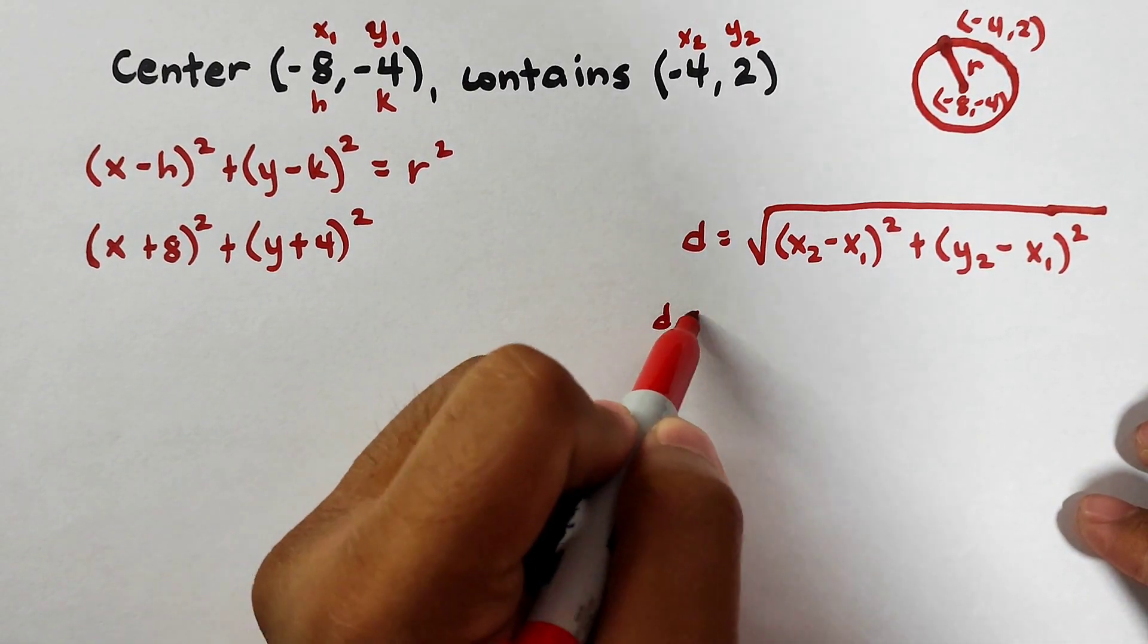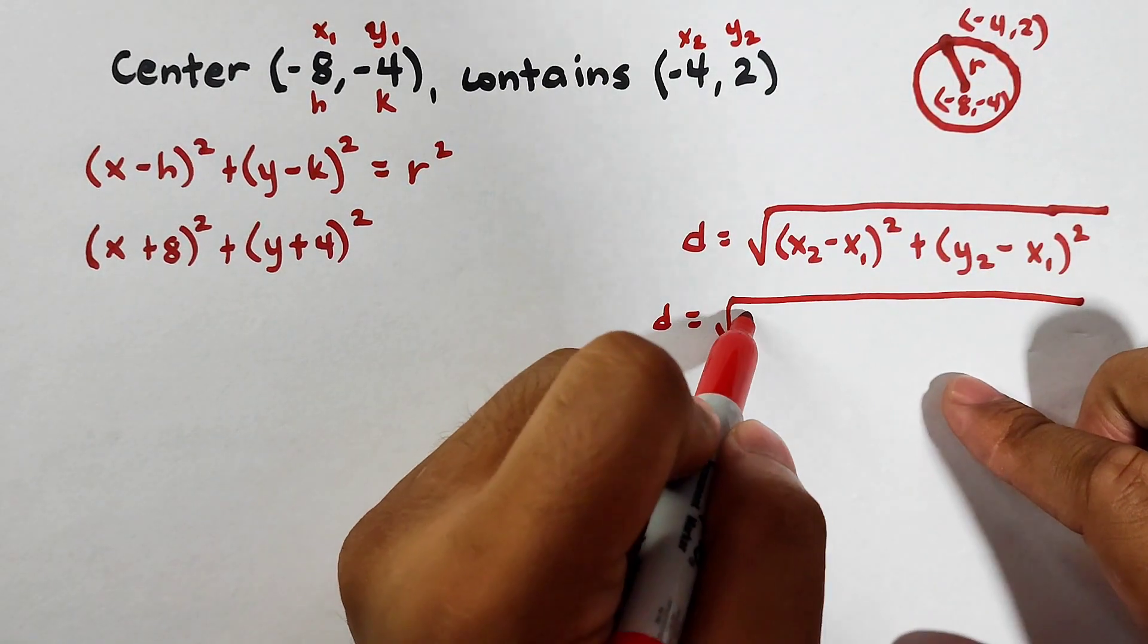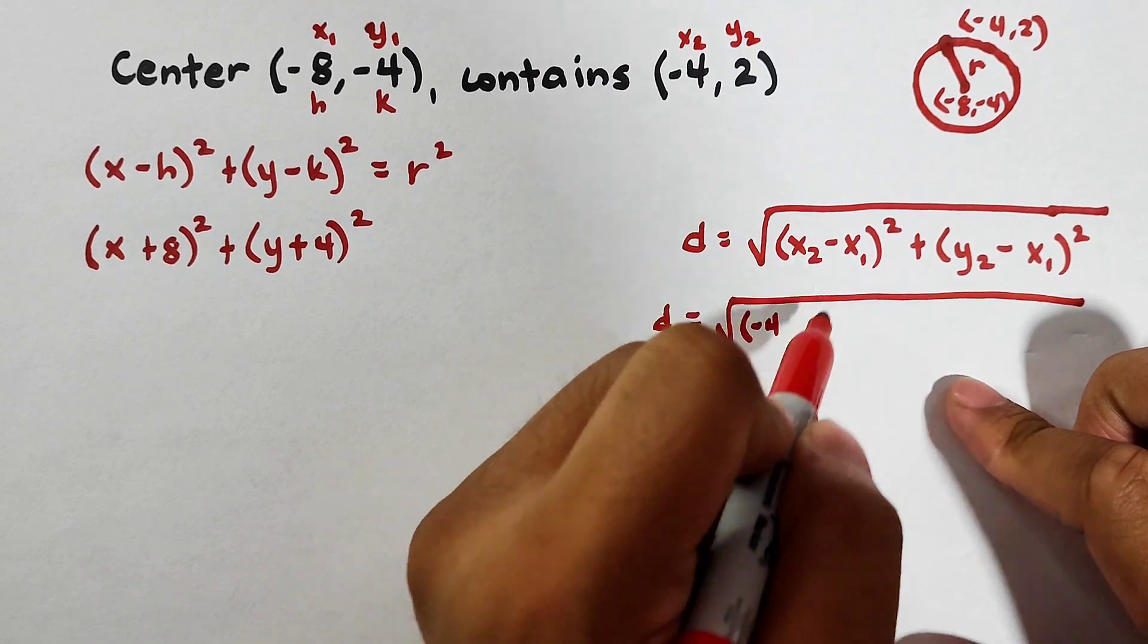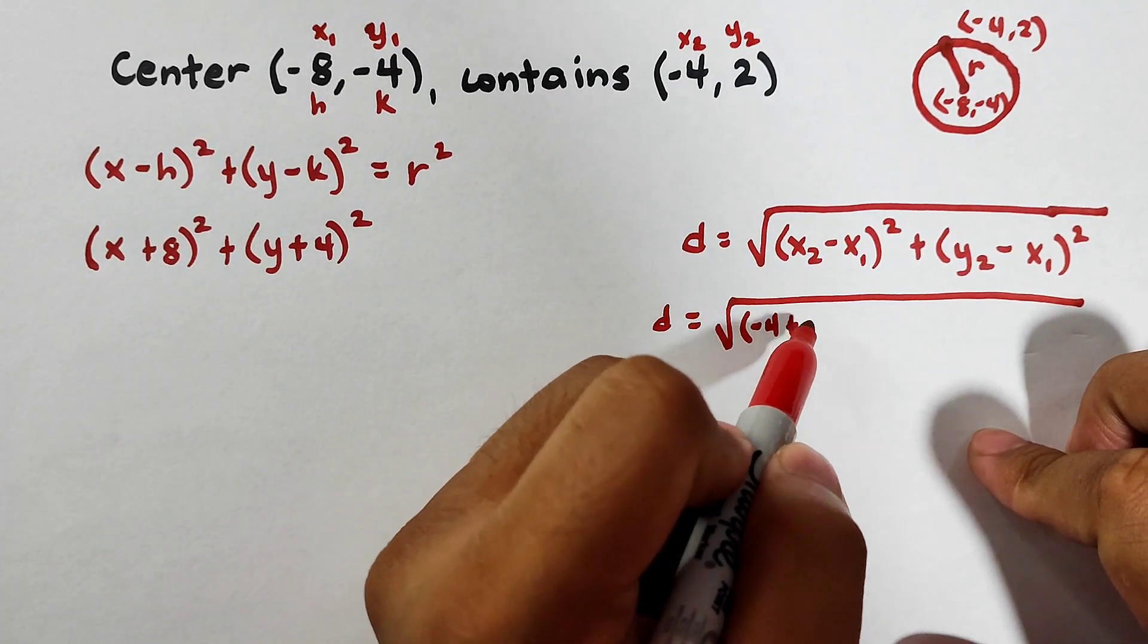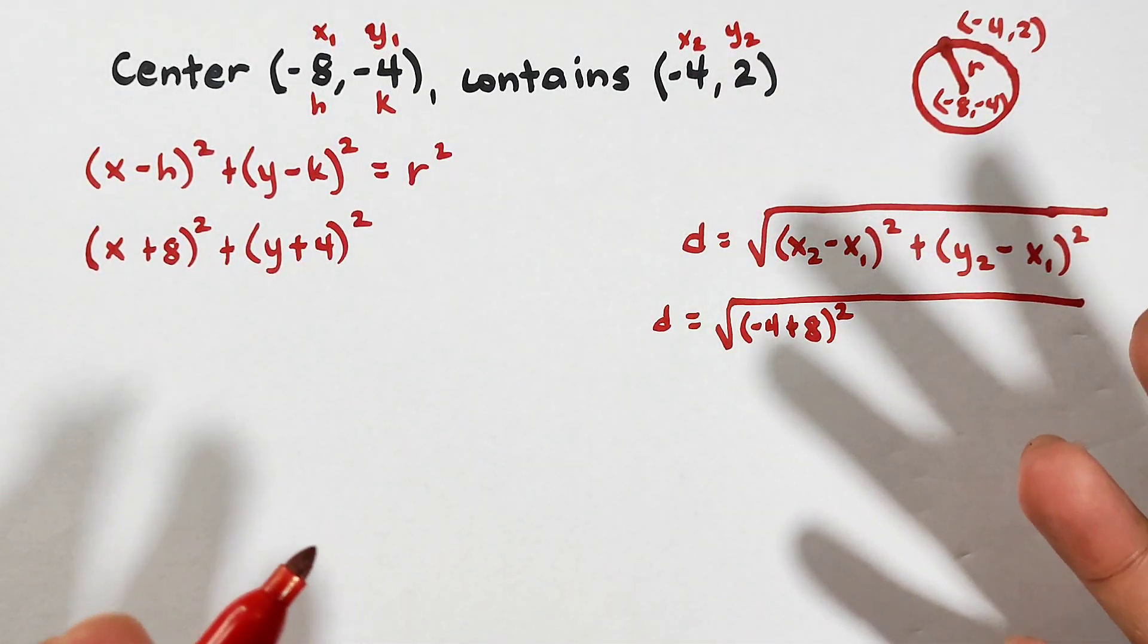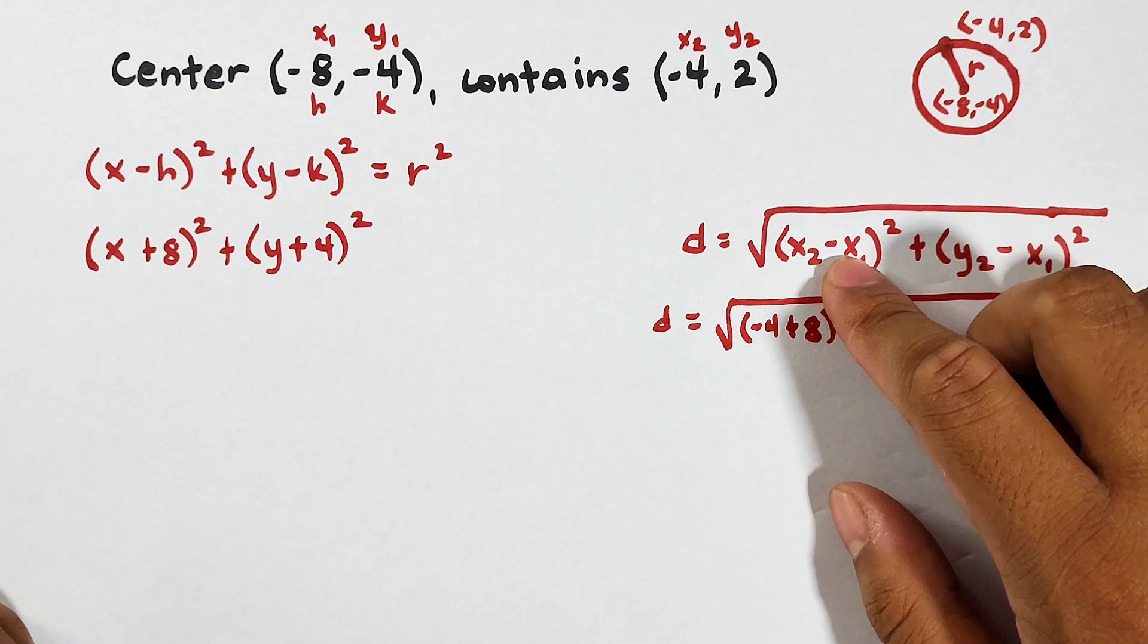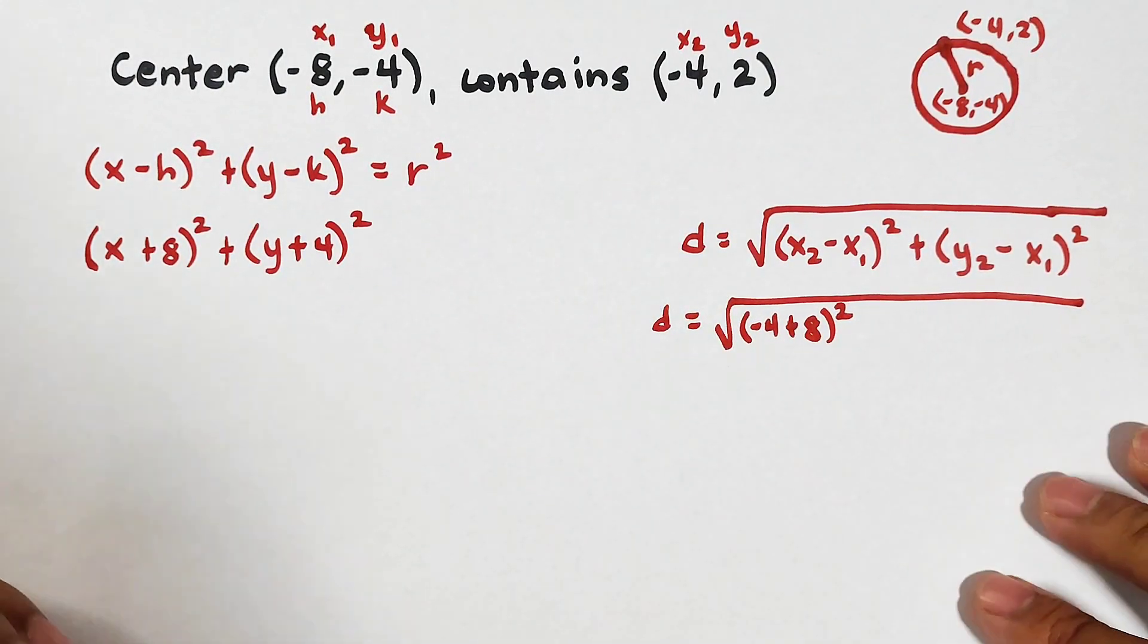D is equal to the square root of, your x sub 2 is negative 4, minus, your x sub 1 is negative 8. So we'll make this plus 8 squared. We're just eliminating one process. Because this is negative, when you put it here, additive inverse, or multiply the signs. Plus,